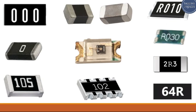For this one we have R030, so its value is 0.03 ohms. The 'R' refers to a decimal point. For this resistor, as you can see, this is basically a general purpose resistor, a standard resistor, and its value is 2.3 ohms. For this one it equals 64 ohms.